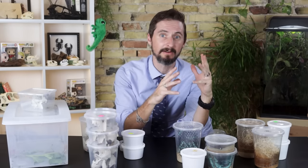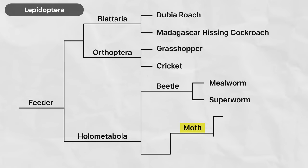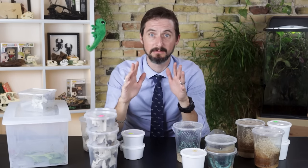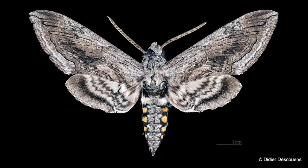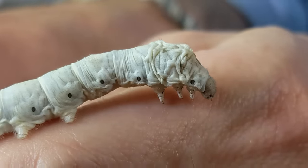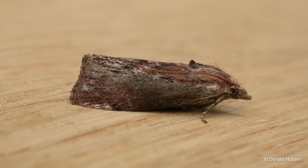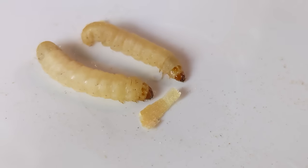The remaining holometabolous insect feeders we have here are more closely related to one another than they are to the beetles. The last clade itself contains two clades of excellent feeders. The first are the moths of the clade Lepidoptera, which contains three great feeders. These are all moths, though I wouldn't fault you if you didn't recognize them as such because they are juveniles. These would be hornworms — the tobacco hawk moth of the family Sphingidae — silkworms, the domestic silk moth of the family Bombycidae, and waxworms, the greater wax moth of the family Pyralidae.